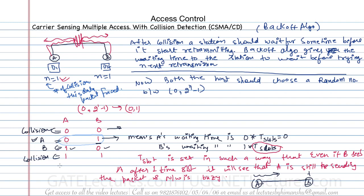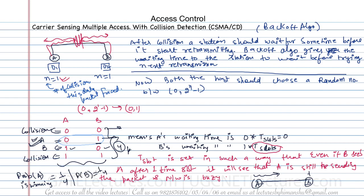After the first iteration of this algorithm, there are 4 total possibilities. The probability of A winning the collision is 1 out of 4, because only in one case A is winning. Similarly, the probability of B winning the collision is 1 out of 4. The probability of collision again is 2 out of 4, which equals 1 out of 2. There is still a 50% probability that both stations will collide again.